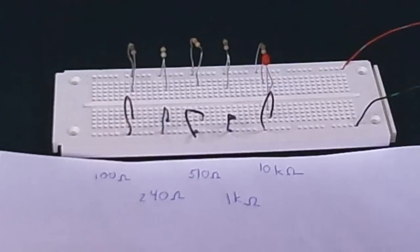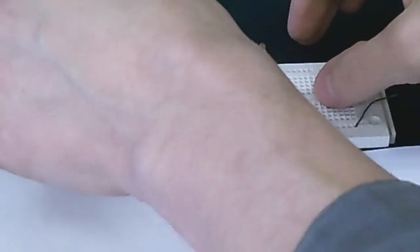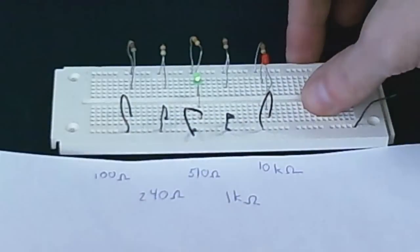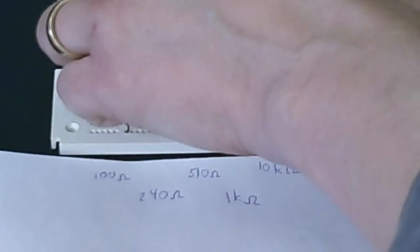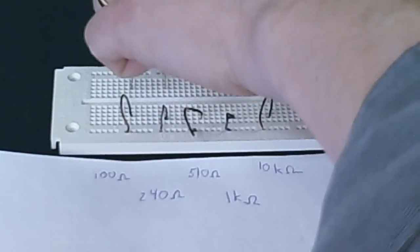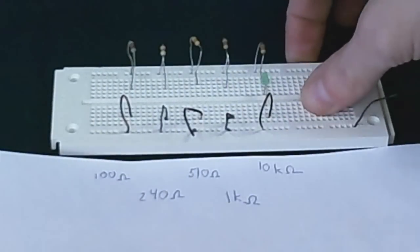Now how bright it is will depend on the LED. Here we have a green LED. So let's try this. There we see it with 100 ohms. There we see it with 240. 510. 1 kiloohm. And again, with 10 kiloohms, it's too dim to see.